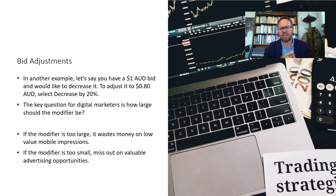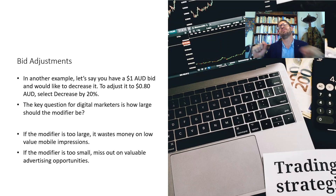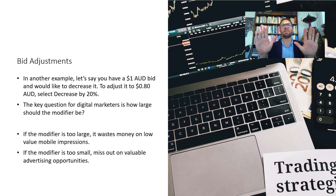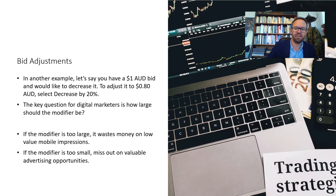If the modifier is too large, you're wasting money on low-value mobile impressions. If it's too small, you miss out on valuable advertising opportunities. You need to align the modifier — which changes bidding per device type — to the actual difference in value. For instance, if past experience shows desktop users respond 20% better than mobile users, you'd adjust by 20% to favor desktops.